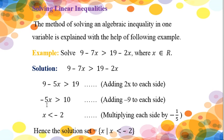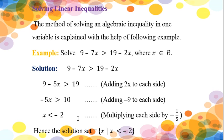Now, to remove that -5 from the variable, we will multiply both sides by -1/5. Since this is a negative number — less than 0 — when we multiply a negative number on both sides of the inequality, the inequality sign will be reversed. So -5 cancels with -1/5 and only x remains, and 10 multiplied by -1/5 becomes -2. Finally, we have the solution: x is less than -2.